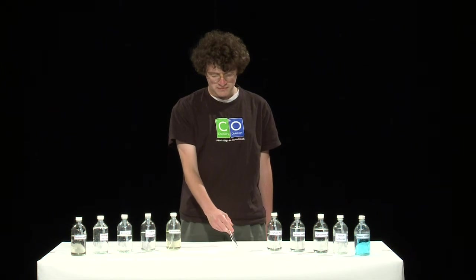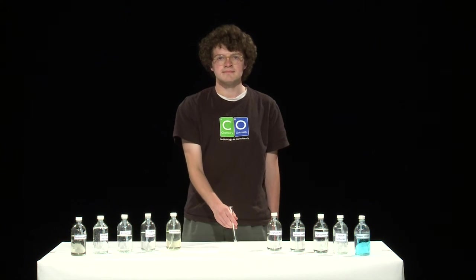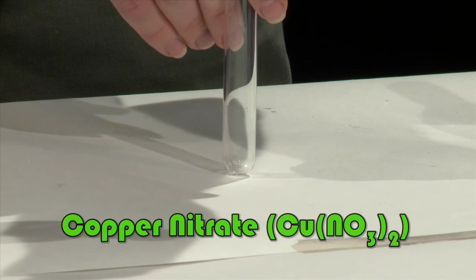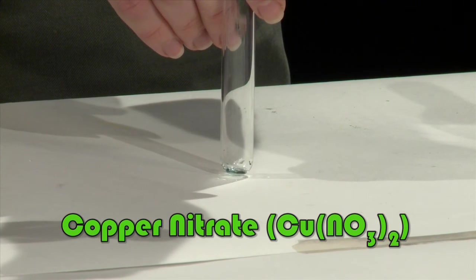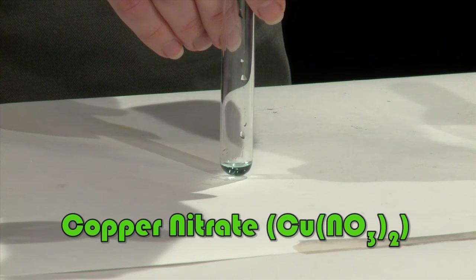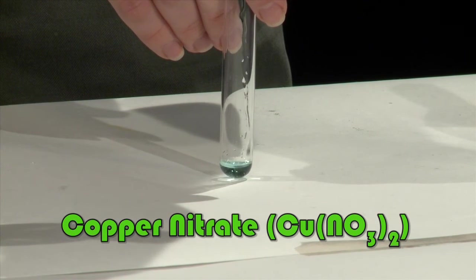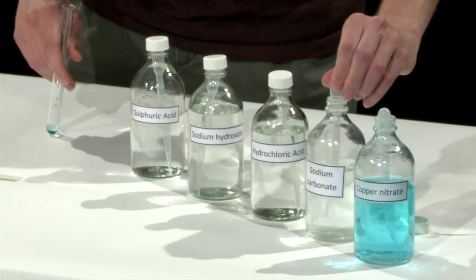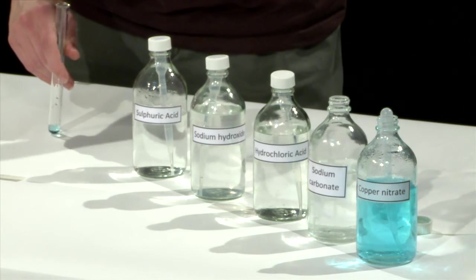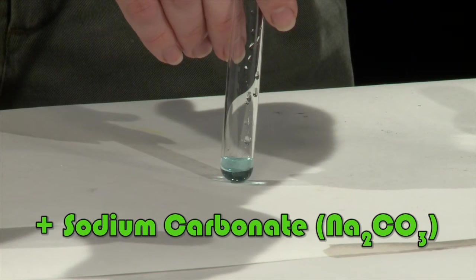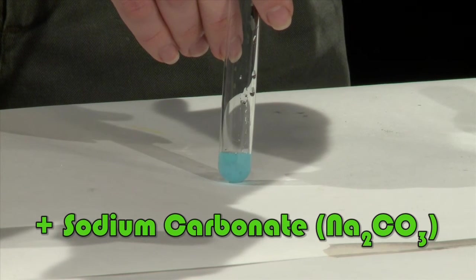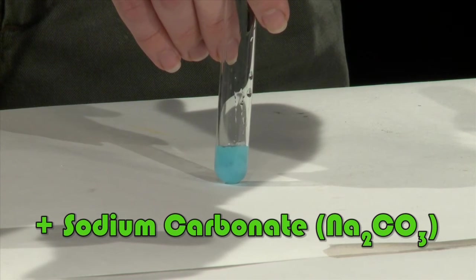The copper pot experiment requires the following solutions. The idea of the experiment is to observe the changes as each chemical is added to the test tube containing the previous chemicals. Start by adding 20 drops of copper nitrate solution. Observe how it is a clear blue solution. Next add 10 drops of sodium carbonate solution. This creates a blue precipitate of copper carbonate.